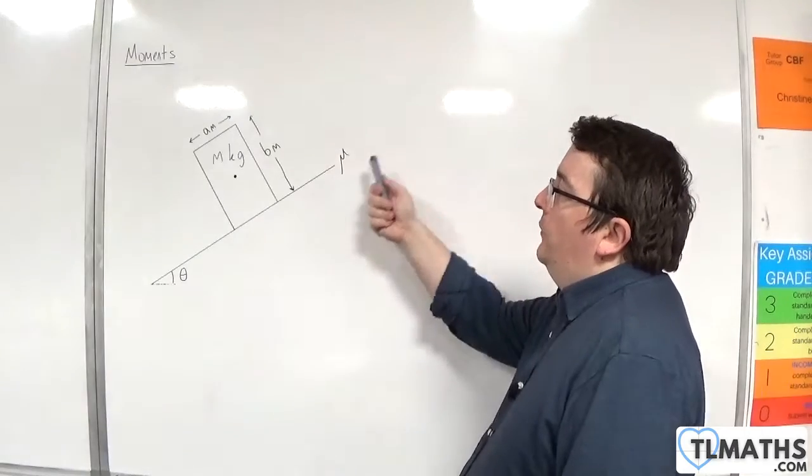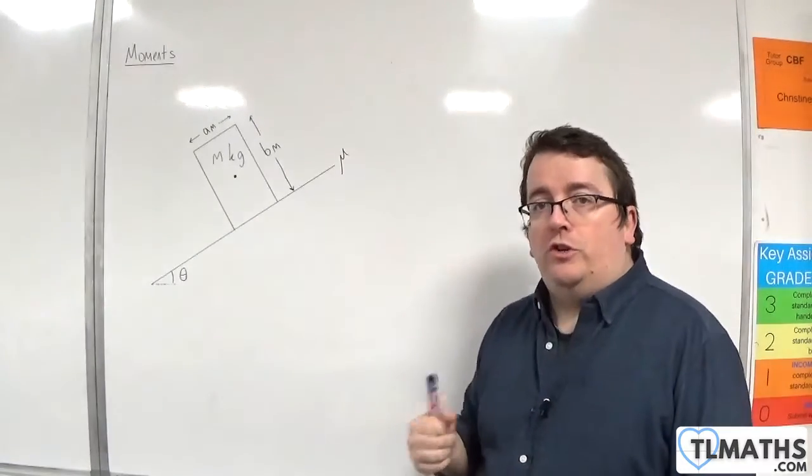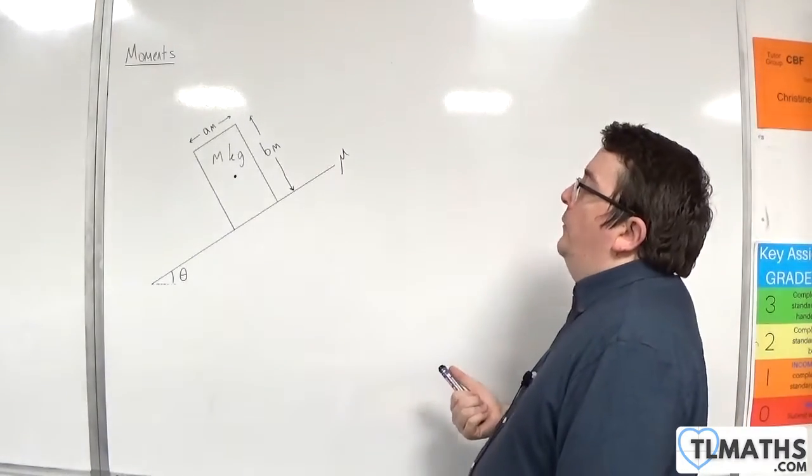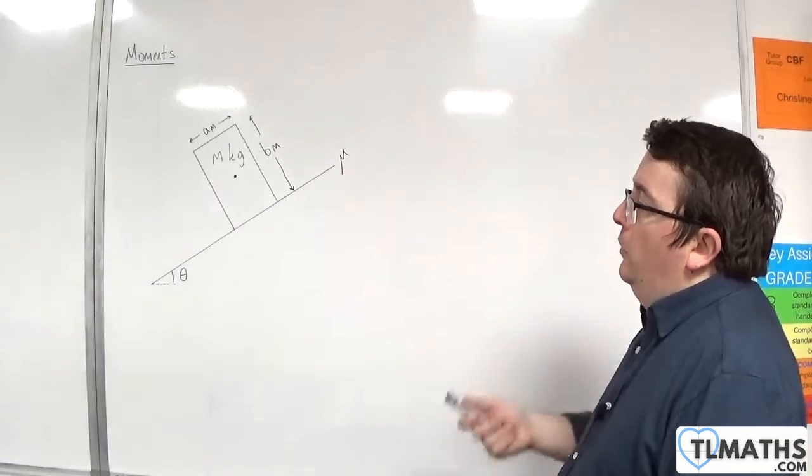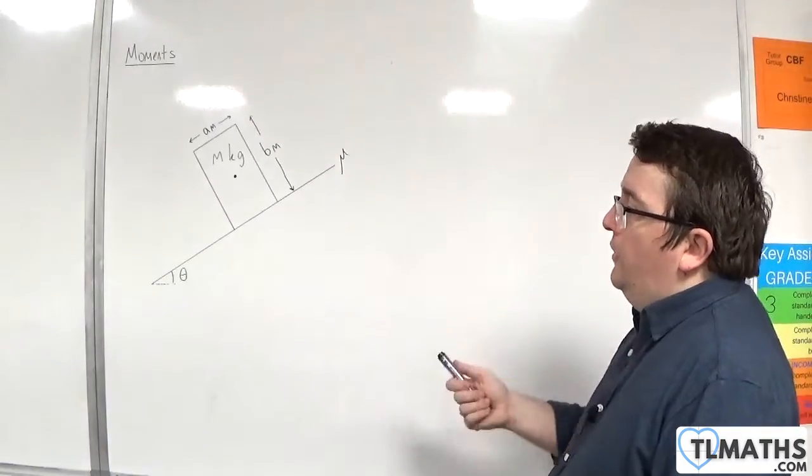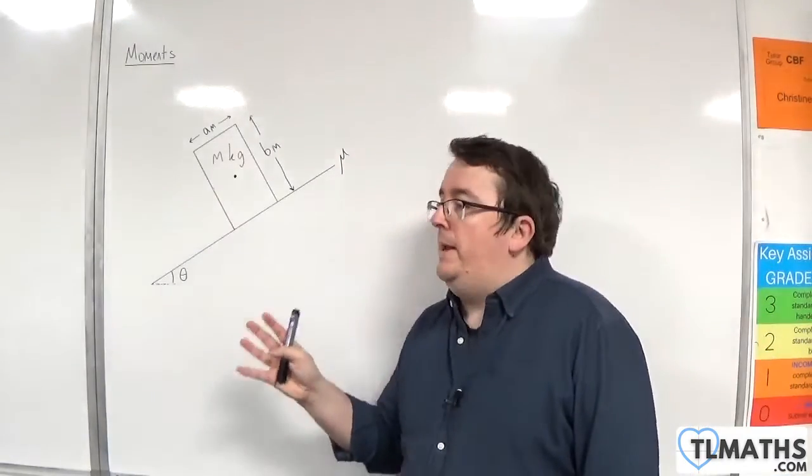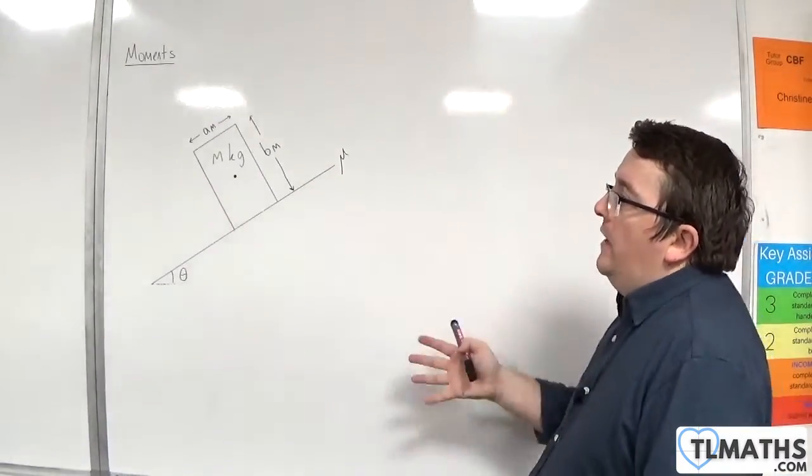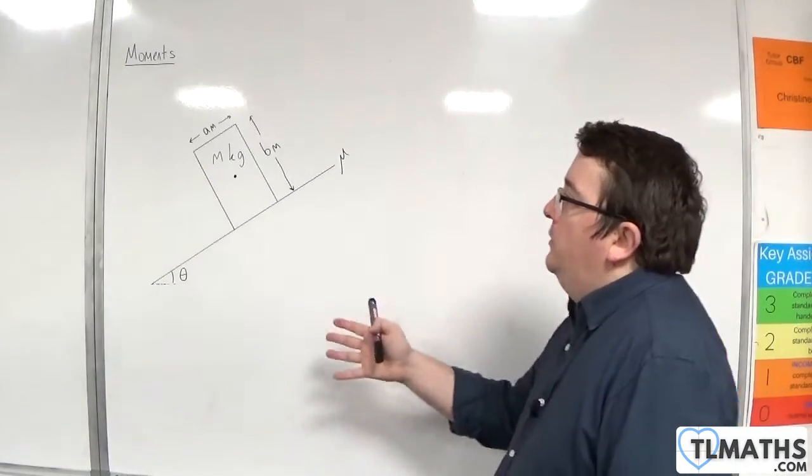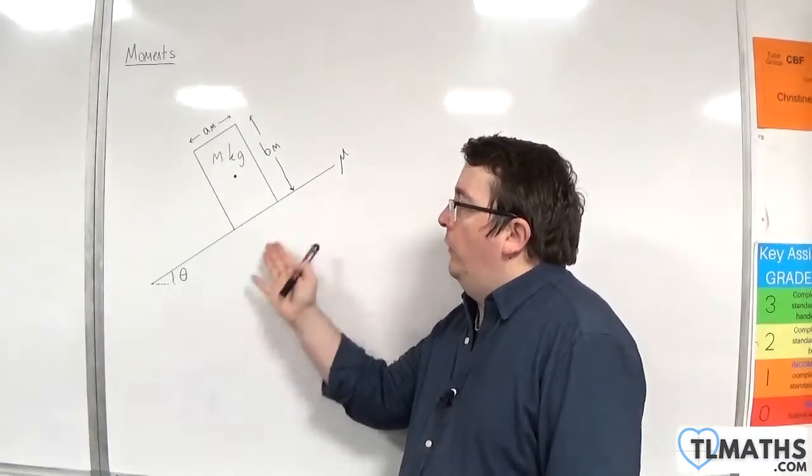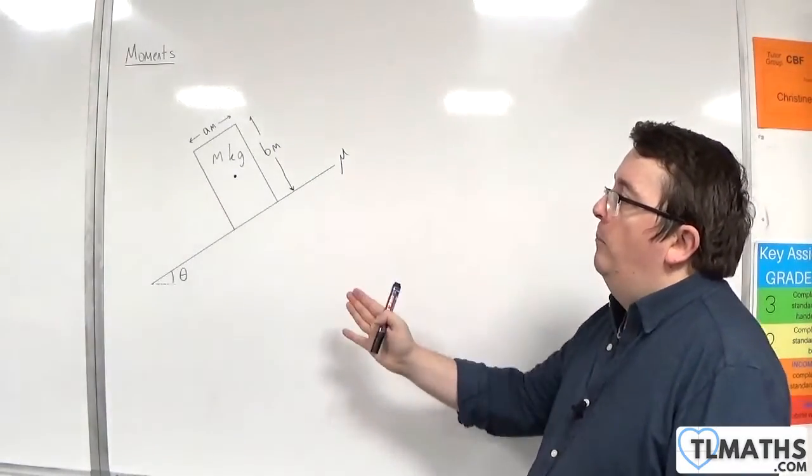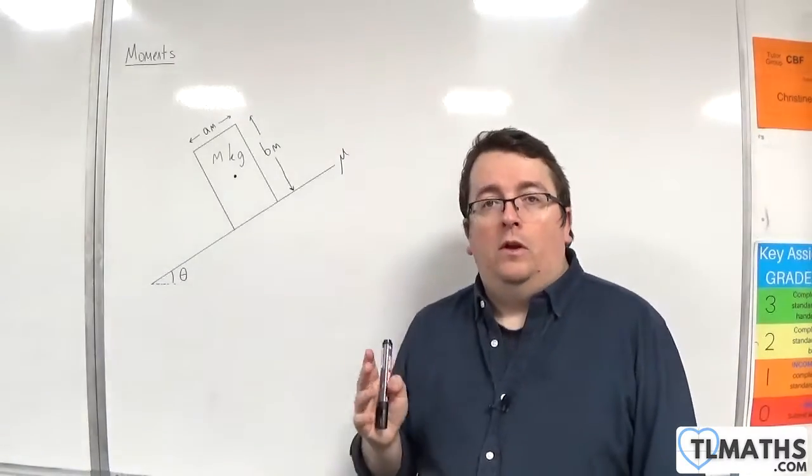The surface is rough with a coefficient of friction of mu. So what we're going to do is take a look at this situation where no other forces are at play, and we're going to see at what point the box will slide down the slope and at what point the box will topple.